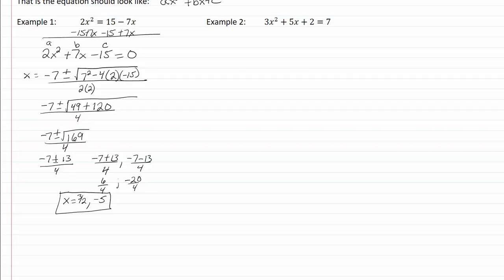Let's take a look at example two. I need to move my 7 over on this one, so I have 3x squared plus 5x minus 5 equals zero.